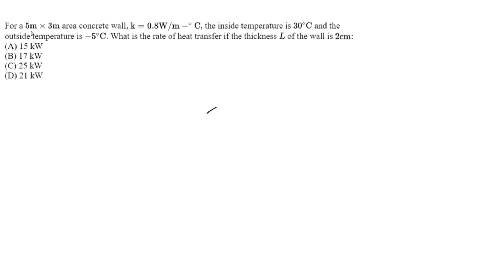So let's draw our wall here. We have some wall that's going to be 5 meters by 3 meters, and the thickness they call L here. In the question L is going to be 2 centimeters which is 0.02 meters. You just move the decimal place 2 to the left or divide by 100. 0.02 meters.